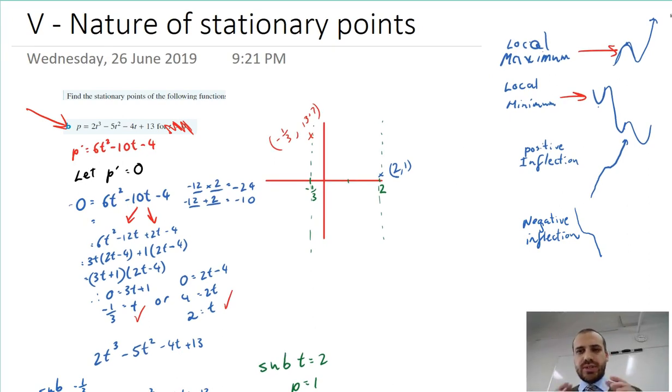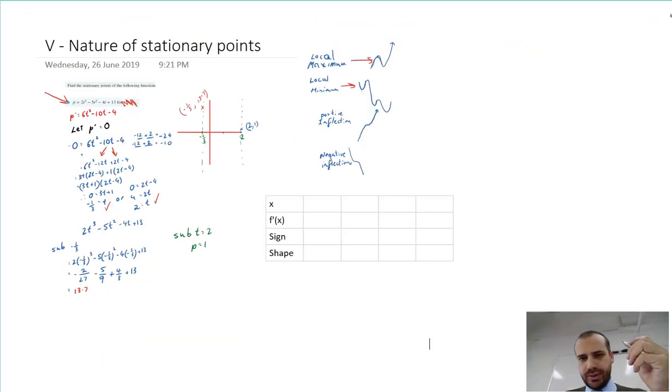We should be able to test any function for the nature of its stationary point, and there's a real way to do this. I'm going to create a table. Here's my table. You can see here, x, f dash x, sign, and shape. You draw up your table. You make yourself three columns.